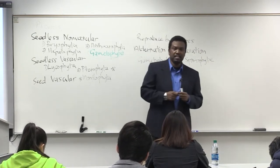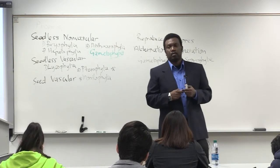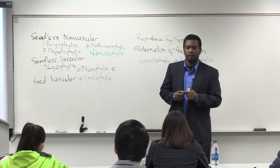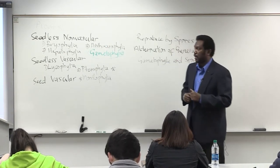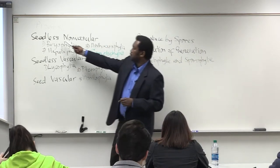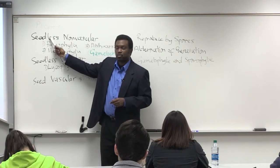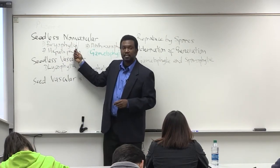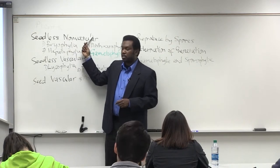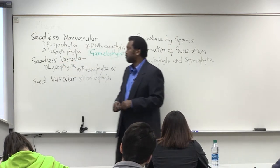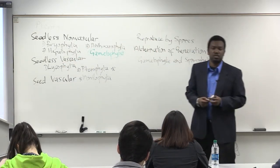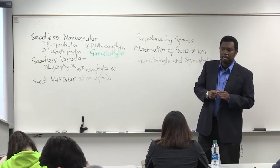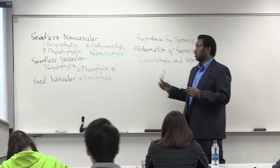In terms of means of reproduction, what structures are they going to be using? Spores. Once it's seedless, we're dealing with spores as opposed to seeds. The first group, seedless nonvascular, reproduced by using spores. The second group, seedless vascular, also reproduces by using spores. But now we have the vascular tissue.